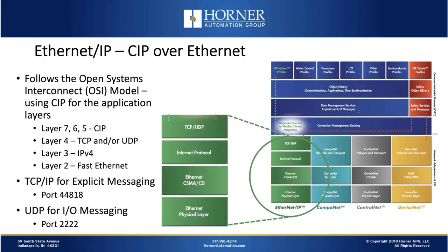We've talked about Ethernet IP from the standpoint of the general market, and we've talked about CIP, the underlying object-oriented data and messaging structure. Let's complete the picture by examining the marriage of CIP with Ethernet. In the seven-layer open systems model, CIP resides at the application layers 5, 6, and 7. Layer 4 is where the transports TCP and UDP come in. Layer 3 is the internet protocol layer, and Ethernet IP uses IPv4 addressing. Layers 1 and 2 are the Ethernet physical layers.